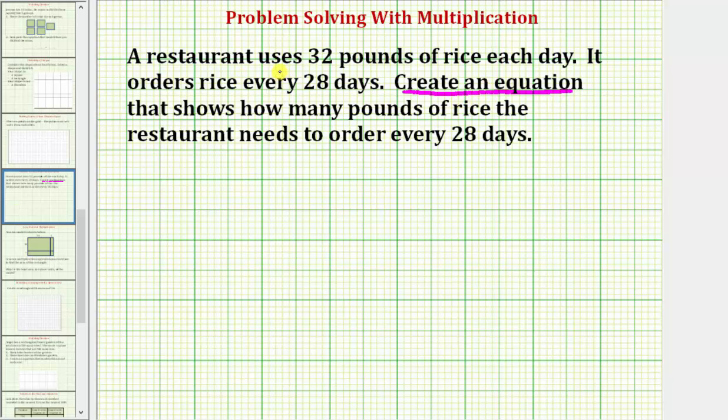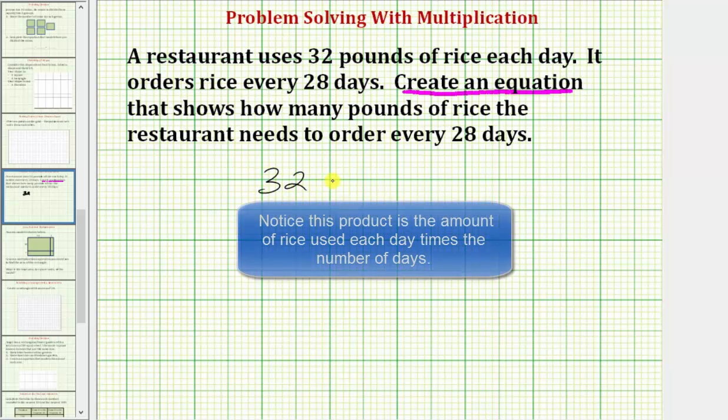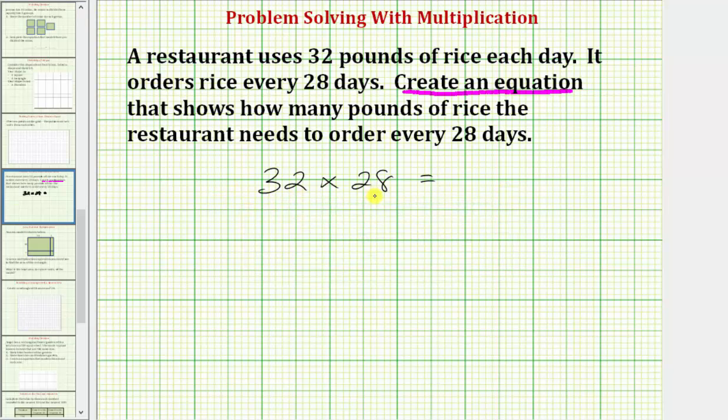Because the restaurant uses 32 pounds of rice each day and they have to order enough for 28 days, our equation is going to be 32 times 28 equals, and now we need to find this product. There are several ways to find this product.